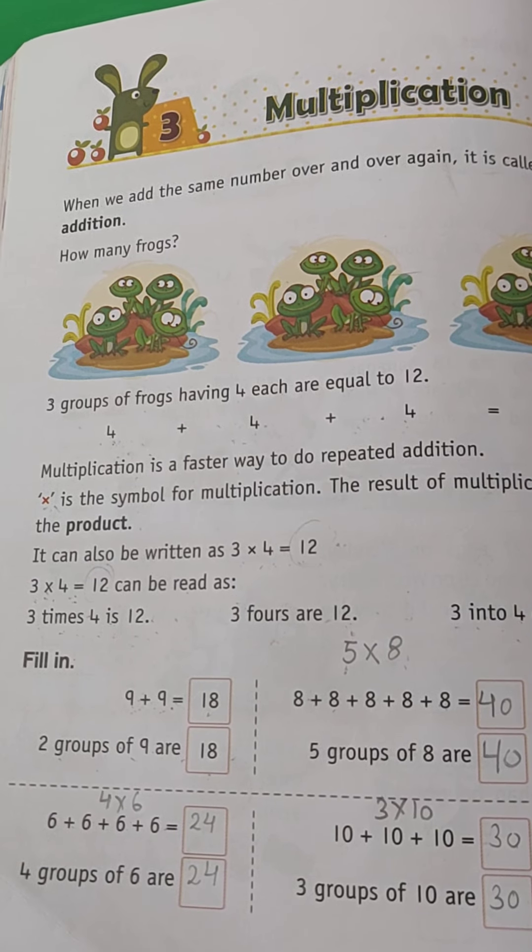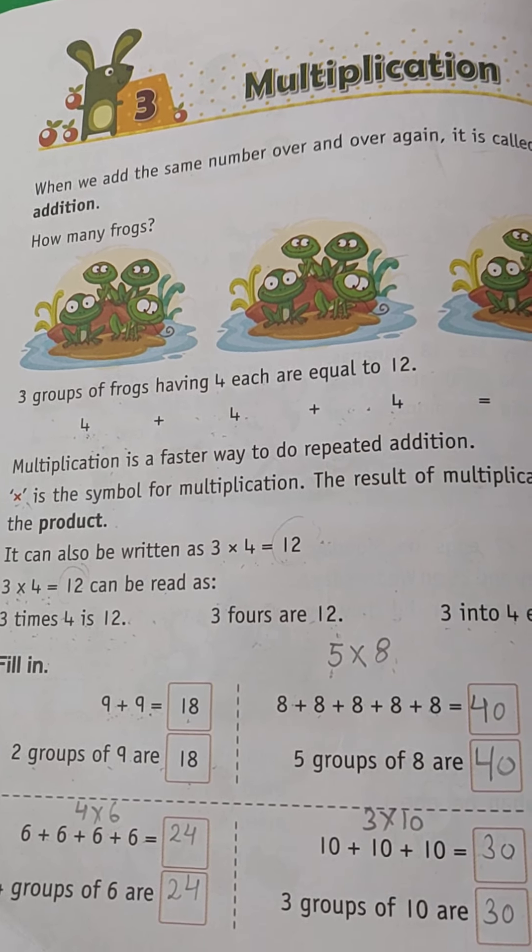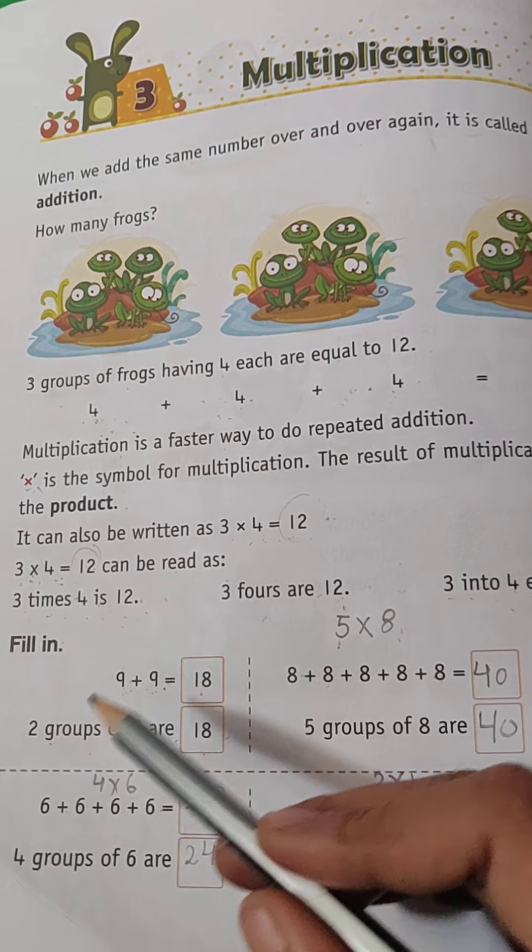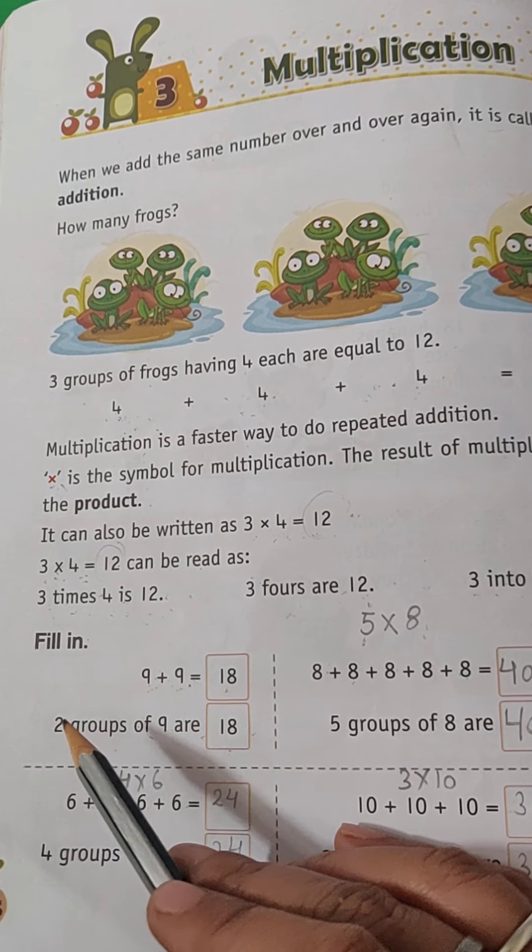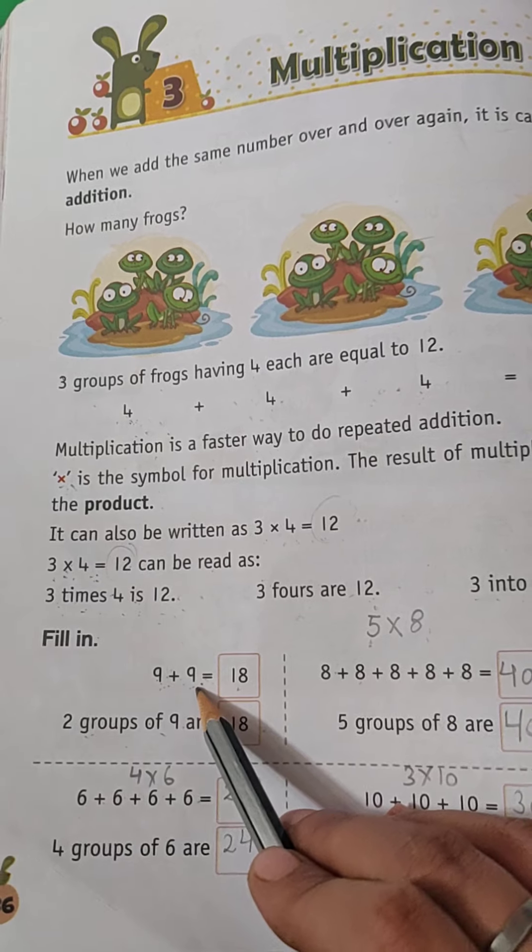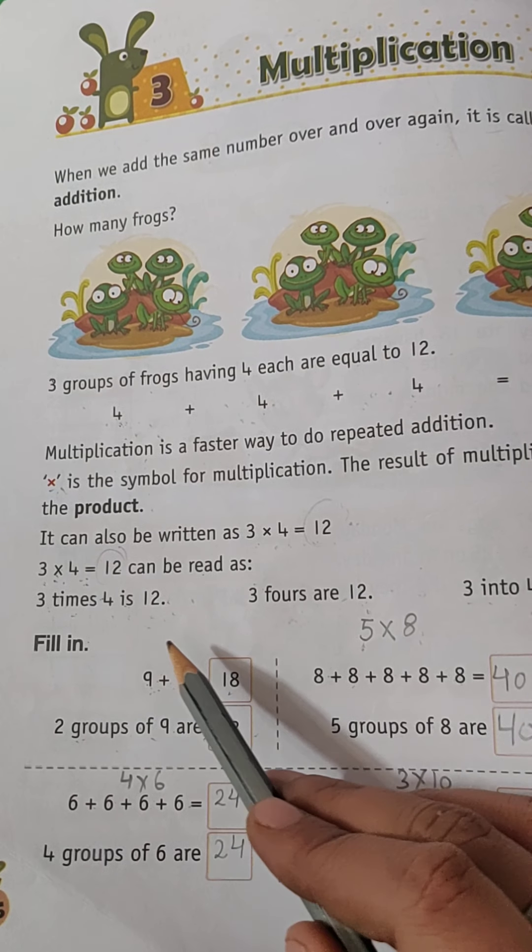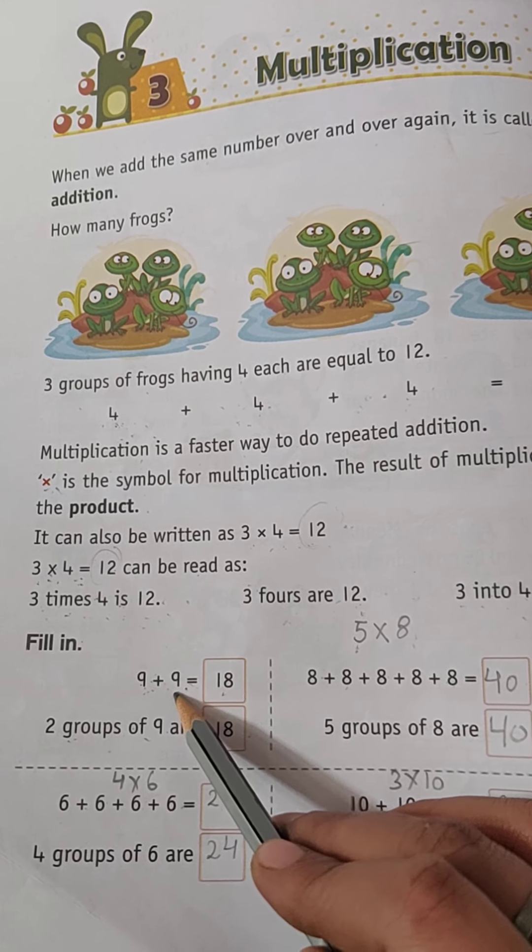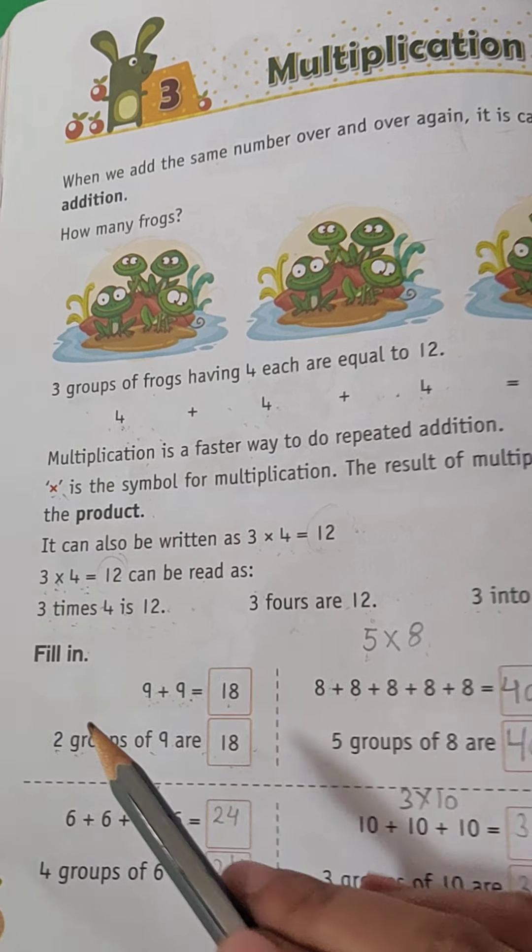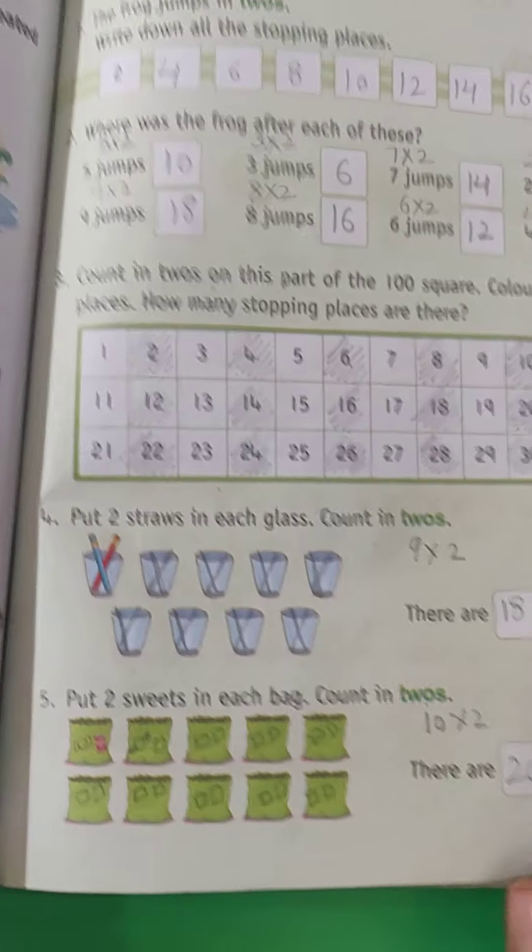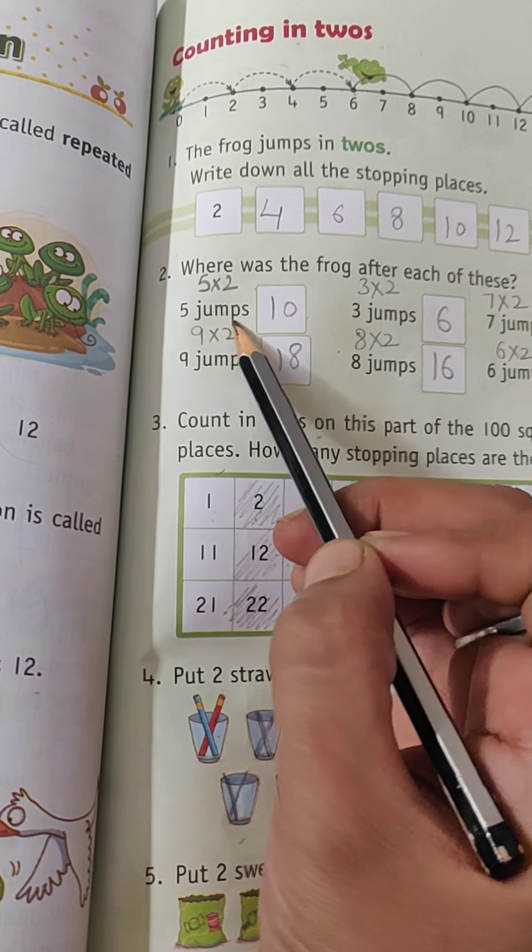Then which type of questions come? First are these types of questions where you have to see how many groups are there of the same number. For example, if you are repeating nine two times, then you will write two groups. Other types of questions are like jumps - if the frog is jumping two numbers in one jump.